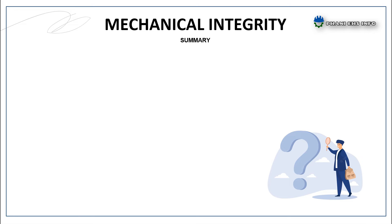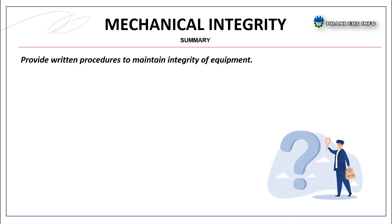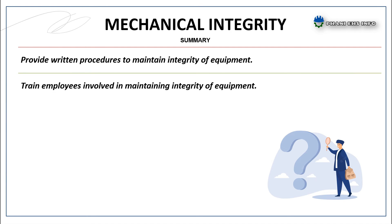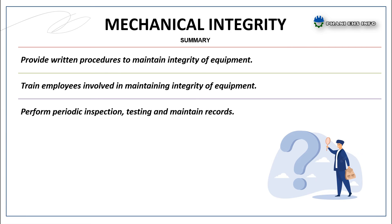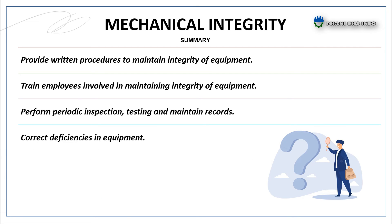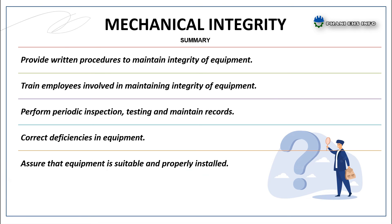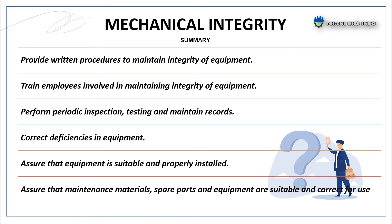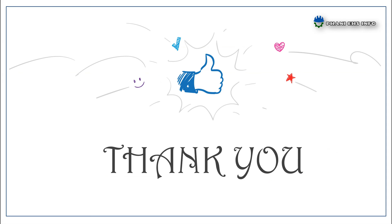The following requirements are to be fulfilled for an effective mechanical integrity program: provide written procedures to maintain integrity of equipment; train employees involved in maintaining integrity of equipment; perform periodic inspection, testing and maintain records; correct deficiencies in equipment; assure that equipment is suitable and properly installed; assure that maintenance materials, spare parts and equipment are suitable and correct for use in the process.